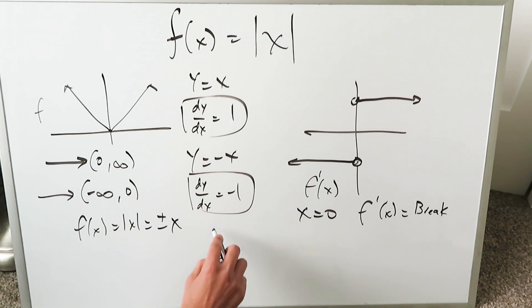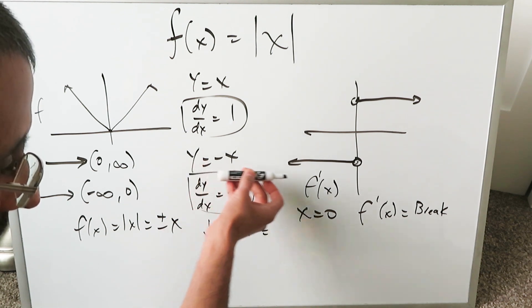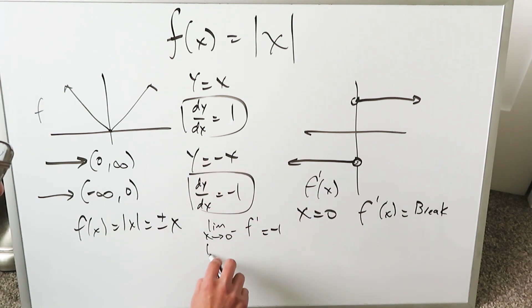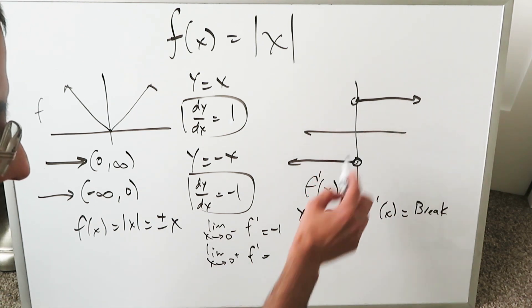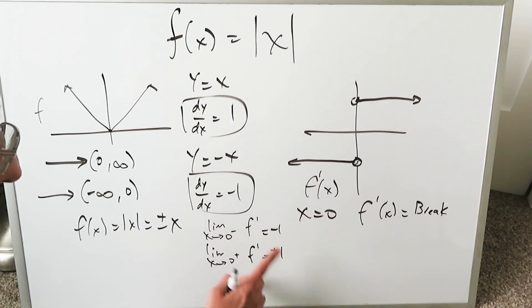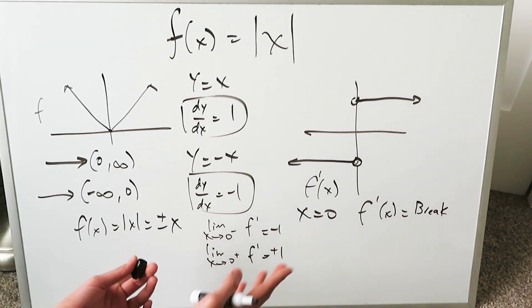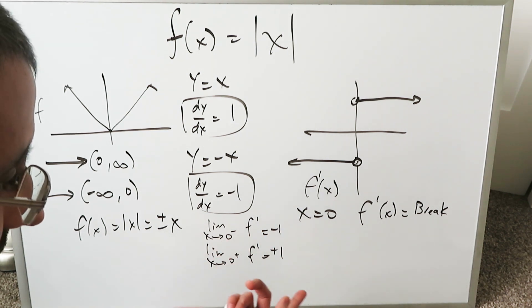If you were to look at it in terms of limits, the limit as x approaches 0 from the left, the derivative of the function as you're approaching from the left will approach minus 1. The limit as x approaches 0 from the right, the derivative function approaches positive 1. Right-hand and left-hand limits are not equal to each other.